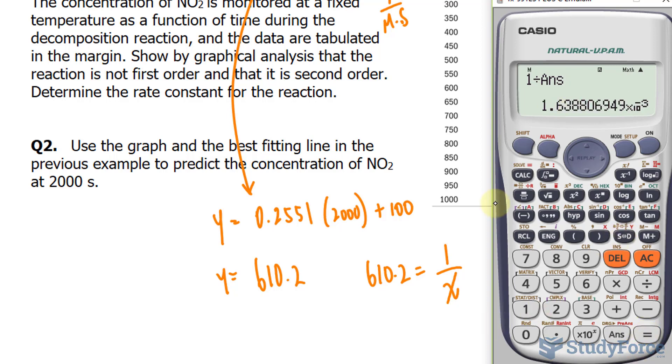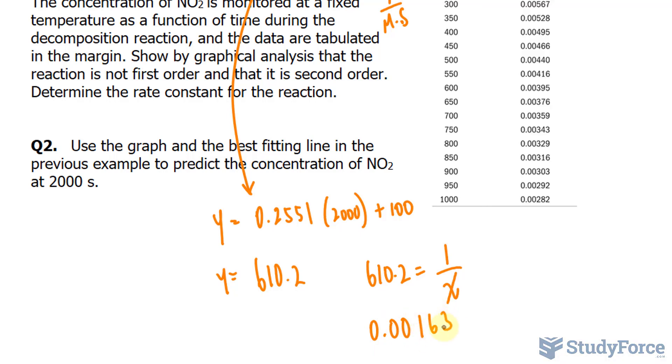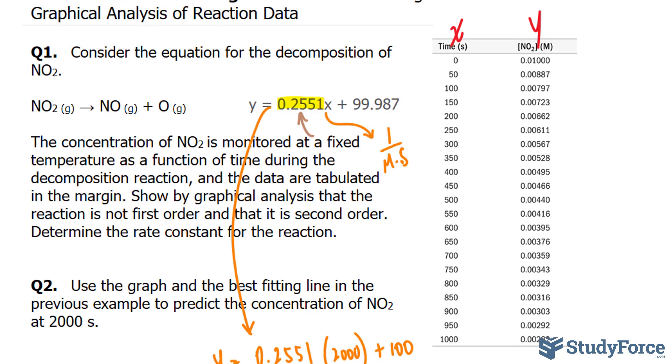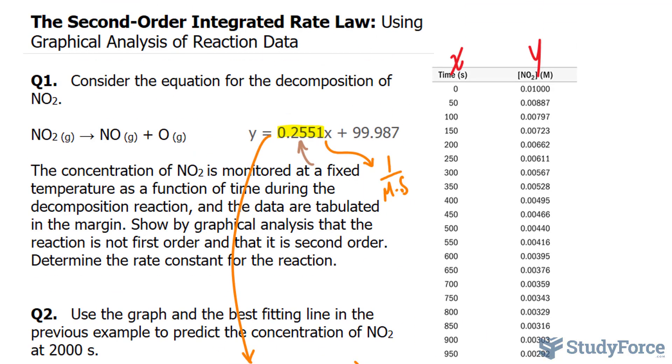And that gives us 0.00163. And we can stop at three significant figures where this becomes a 4, so 0.0164 molars. And there you have it. That is how to use graphical analysis to determine a second-order reaction.